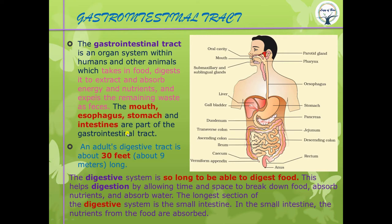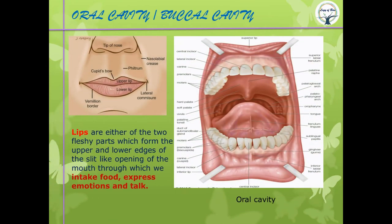The first part of the digestive tract is the mouth, or buccal cavity, guarded by lips. Lips help us intake food, express emotions, and talk. The vertical groove between the base of the nose and the upper lip is called the philtrum — a vestigial depression with no use in humans. The curved shape of the upper lip is called the cupid's bow.